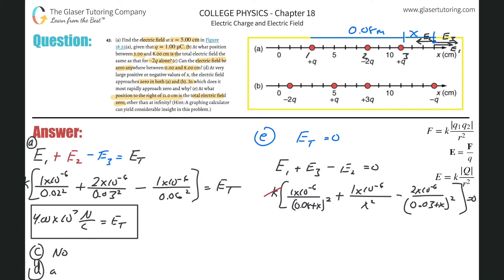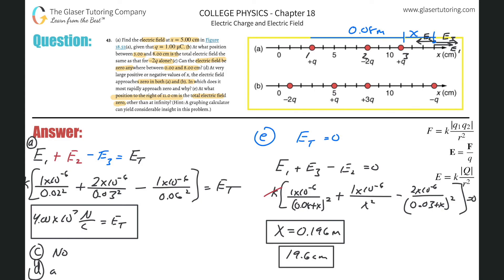Solving this algebraically is very involved, so using Wolfram Alpha gives x = 0.196 meters (reject negative solutions). That means the position is 19.6 centimeters to the right of charge three, which is the answer to letter E.